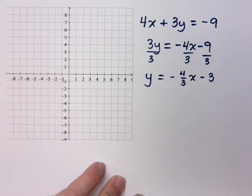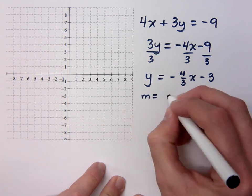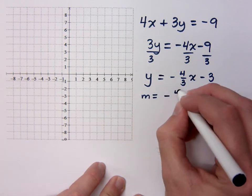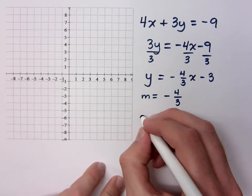Negative 4 thirds x minus 3, so now this is in my slope-intercept form. What is your slope? Negative 4 thirds. This is definitely a case where you do not want to convert this to a mixed number. Please don't tell me the slope is negative 1 and a third. That's just super awkward.